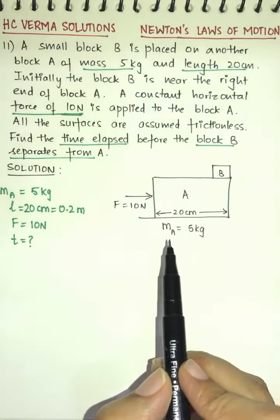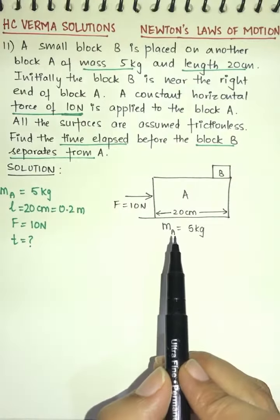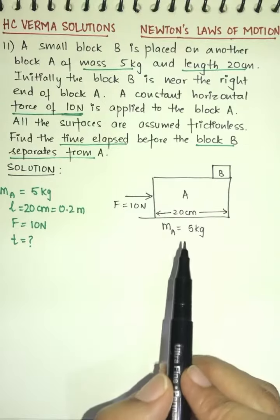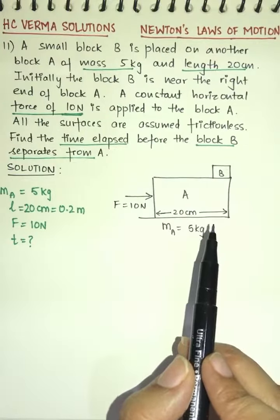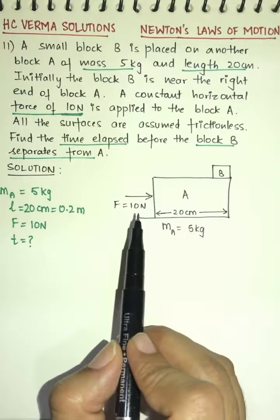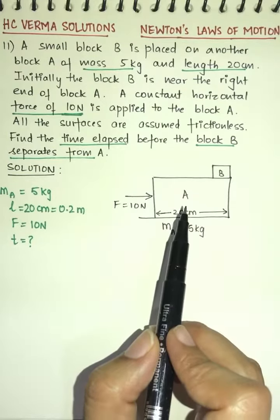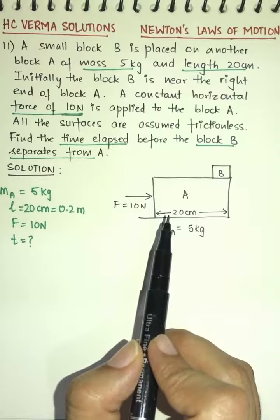In this question, a small block B is placed on another block A of mass 5 kg and length 20 cm.